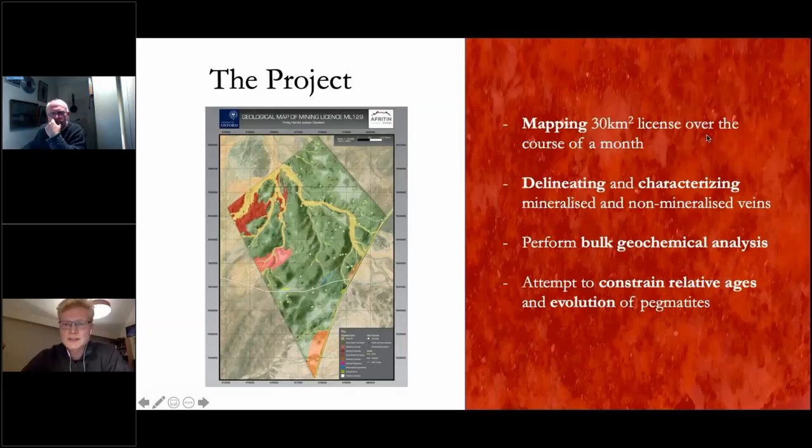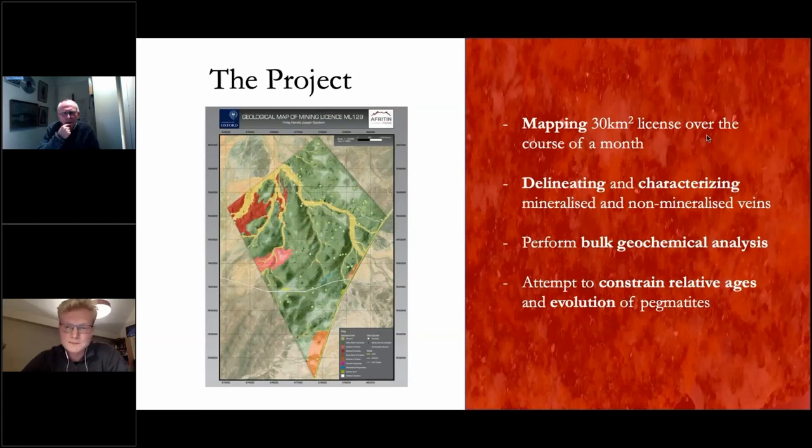Onto the project itself. The project centered around mapping a 30 km² exploration license over the course of a month, with a focus on delineating and characterising mineralised and non-mineralised pegmatite veins. Then taking rock chip samples of these pegmatites and performing bulk geochemical analysis on them, and using the geochemical data as well as the field data to make an attempt to constrain the relative ages and evolution of the pegmatites and where they actually came from. This is important because if we can understand where the pegmatites came from, we can design our exploration campaigns based on that information.